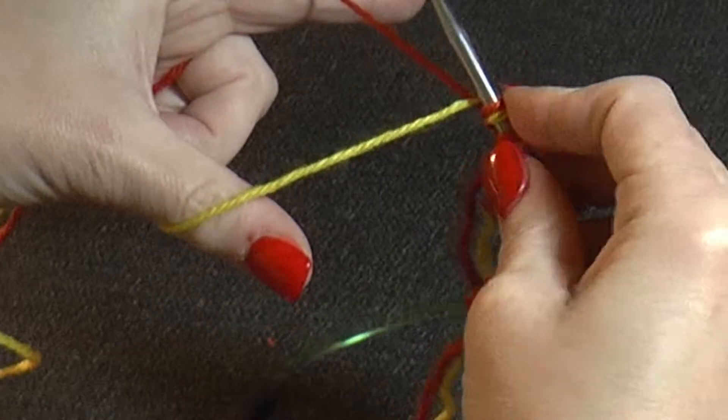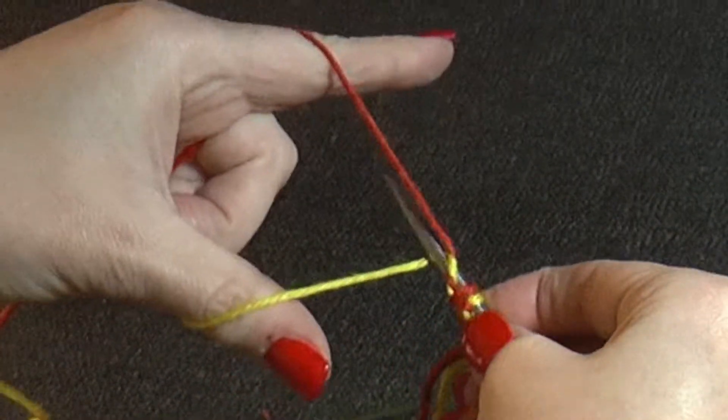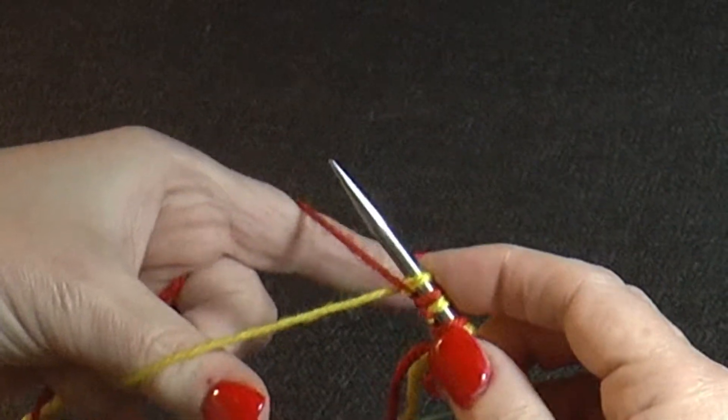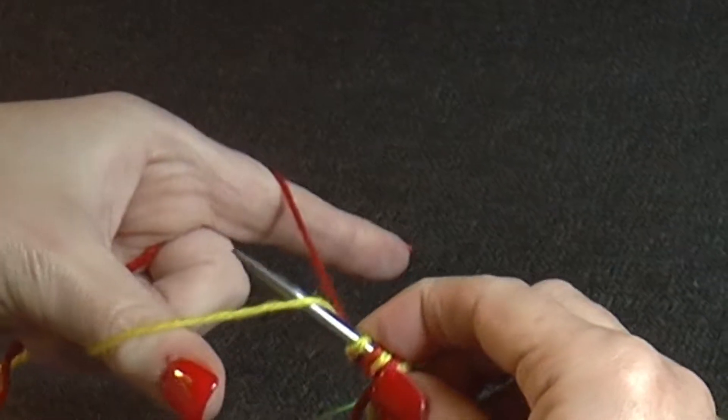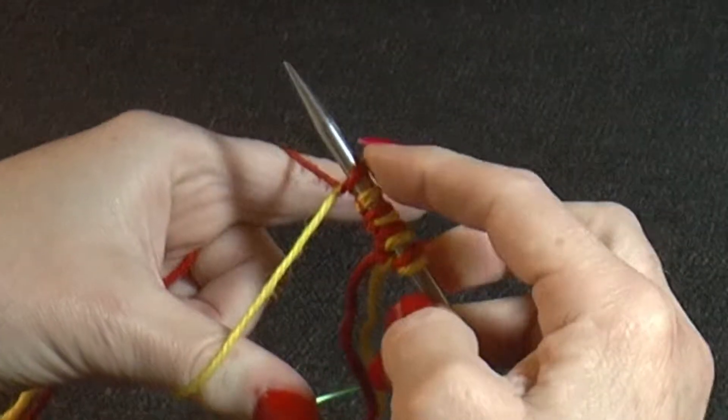Let's do that again. Around, through the middle, you've got one color. Now thumb, over index finger, your second color.